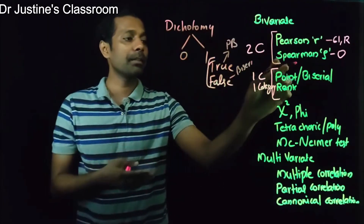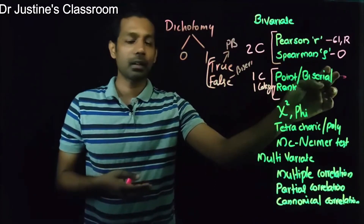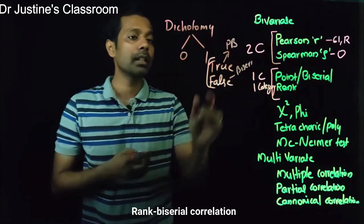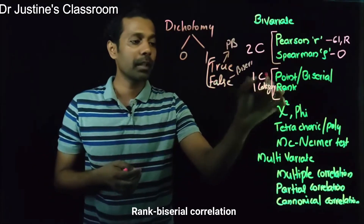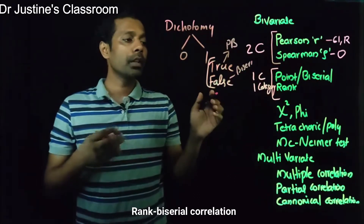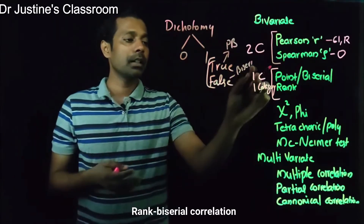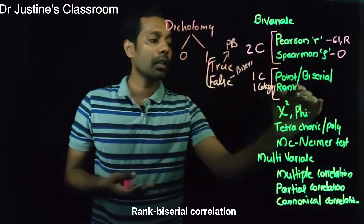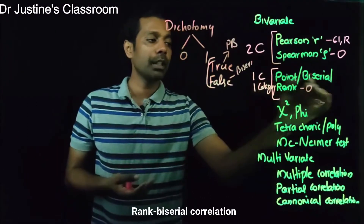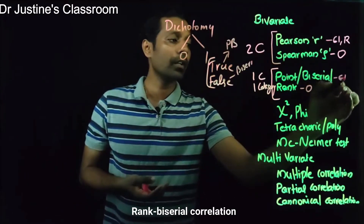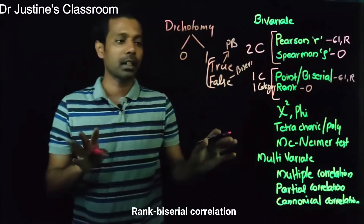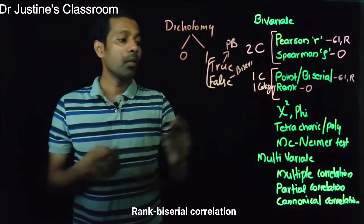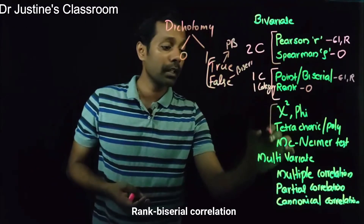The other one is rank correlation. Rank correlation is based on the second variable: if the continuous variable is ordinal in nature, you have to go for rank correlation. So the conditions for the other two (point biserial and biserial) require the continuous variable to be either equal interval or ratio scale.